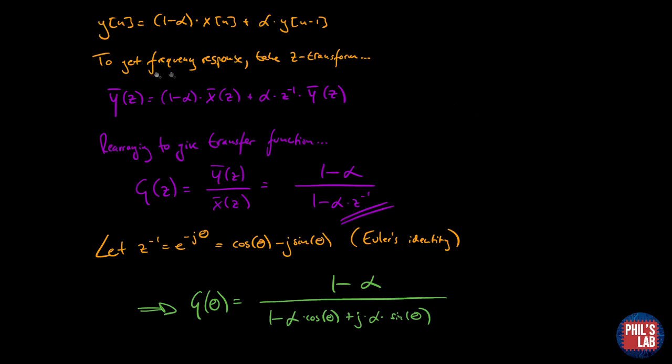I take my Z-Transform, rearrange it to give my transfer function which is the ratio of output to input. That turns out to be 1 minus alpha over 1 minus alpha times Z to the minus 1. Remembering our theory Z to the minus 1 is actually equal to e to the minus j theta. Using Euler's identity I can convert that to cos theta minus j sine theta. G in terms of theta is then equal to 1 minus alpha divided by 1 minus alpha times cos theta plus j times alpha times sine theta.